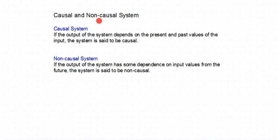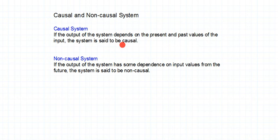Causal and non-causal systems. What is a causal system? If the output of the system depends on present and past values of the input, the system is said to be causal. A non-causal system is one where the output has some dependence on the future value of the input.